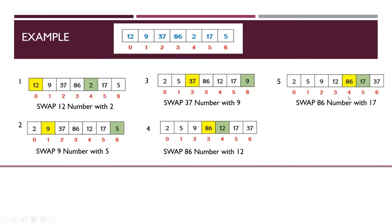Now find the fifth smallest number stored in the array between index 4 and 6. The fifth smallest number is 17. Check if the number at index 4 is greater than the fifth smallest number at index 5 — meaning 17 is smaller than 86 at index 4. If so, swap the numbers — here 86 swaps with 17.